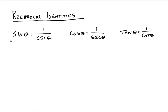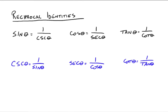We can write it this way: the sine of theta is equal to 1 over the cosecant of theta because they're reciprocals of each other. So cosine theta equals 1 over secant theta, and tangent theta equals 1 over cotangent theta. Which also means we can say it the other way: cosecant theta is 1 divided by sine theta, secant theta is 1 over cosine theta, and cotangent is 1 over tangent theta.